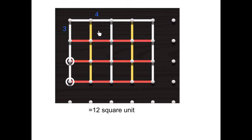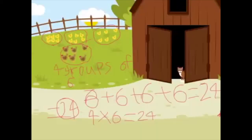One, two, three, four, five, six, seven, eight, nine, ten, eleven, twelve. If the area of this square is twelve square units.